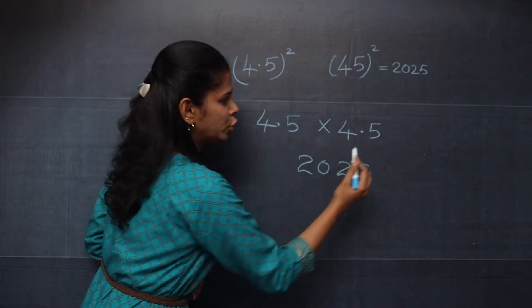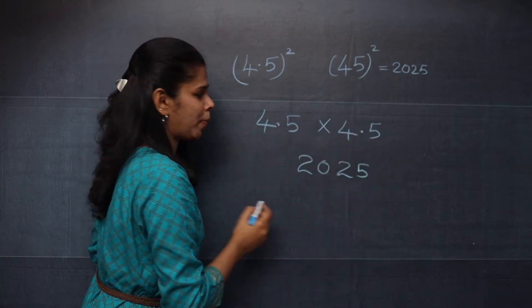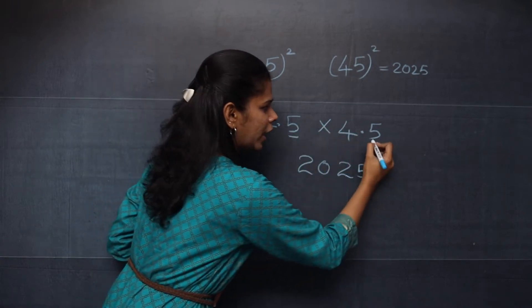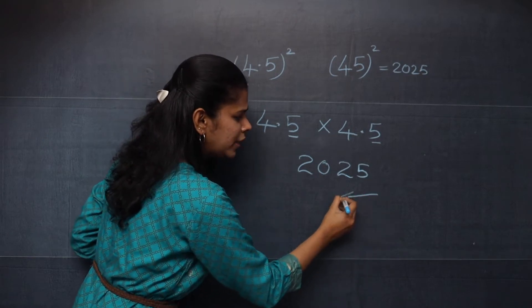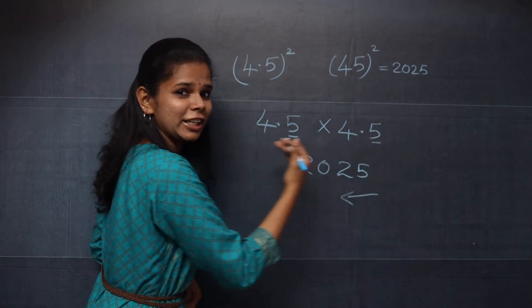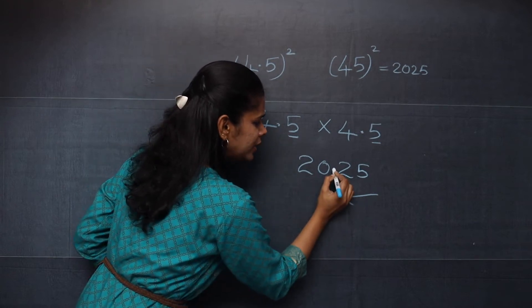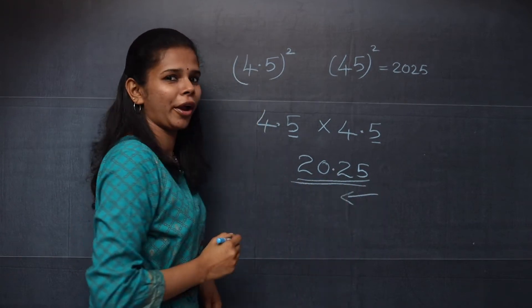Now, you should count the digits after the decimal point. Here you have 1 and here also you have 1. So 1 plus 1 equals 2. You will put the decimal point from right to left. So your answer will be 20.25.